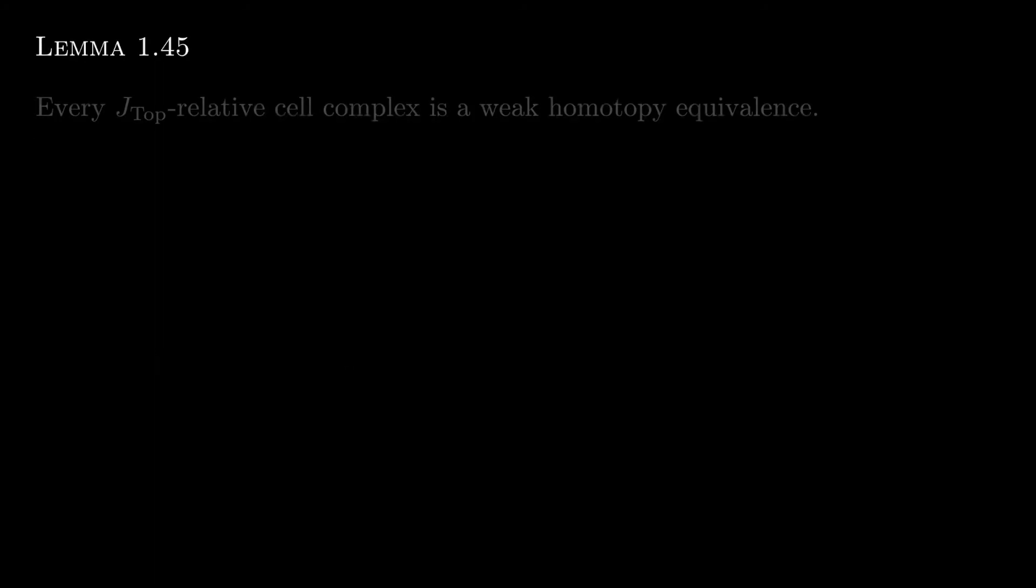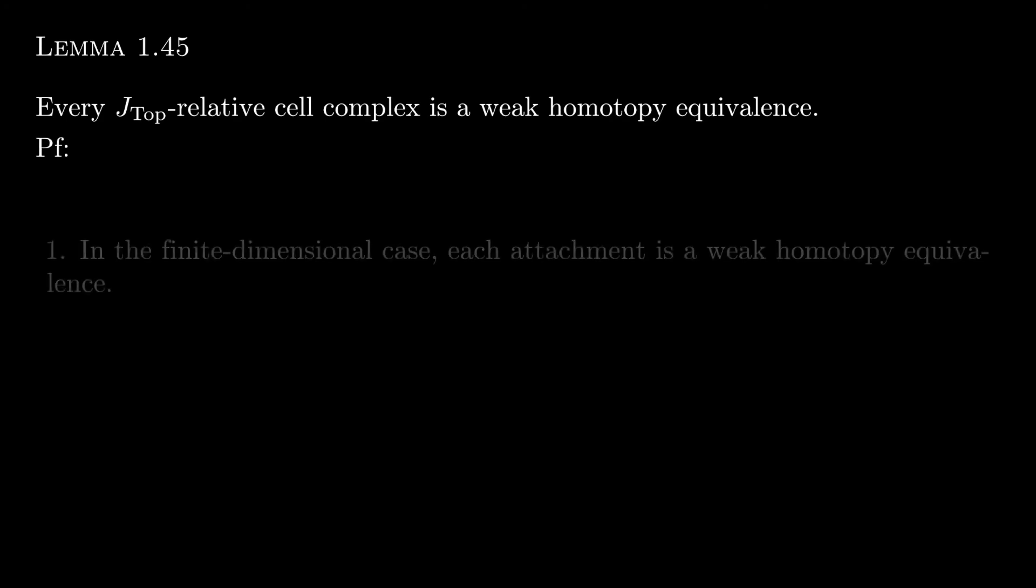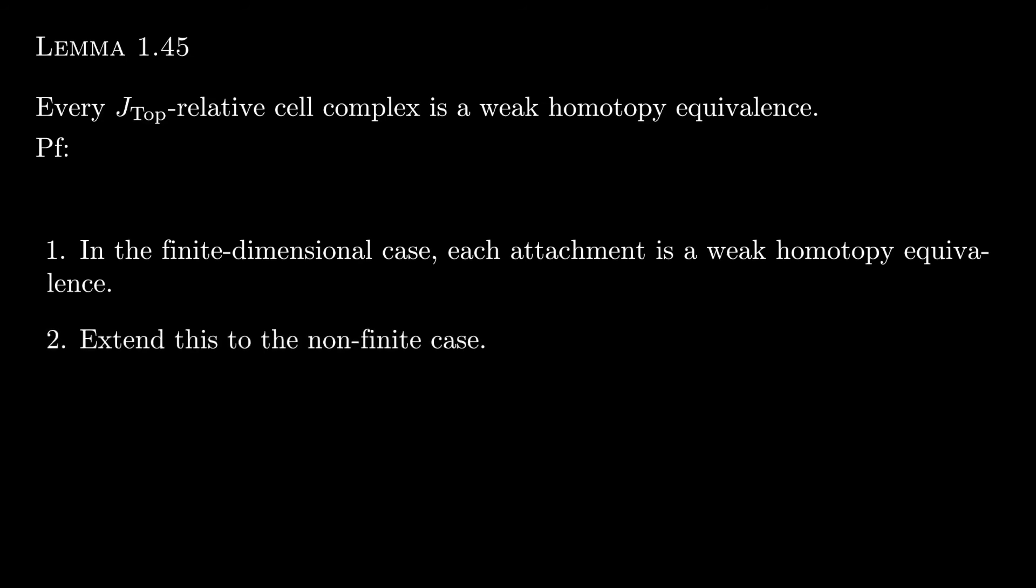Our final lemma for this section is that every J-top relative cell complex is in fact a weak homotopy equivalence. So to see this, we're going to have to do two steps. First, show that this is the case for finitely many attachments and then show that it's enough to just consider the finite case.